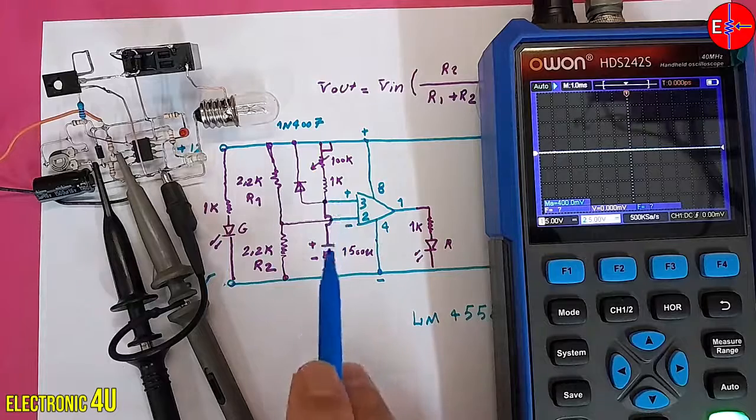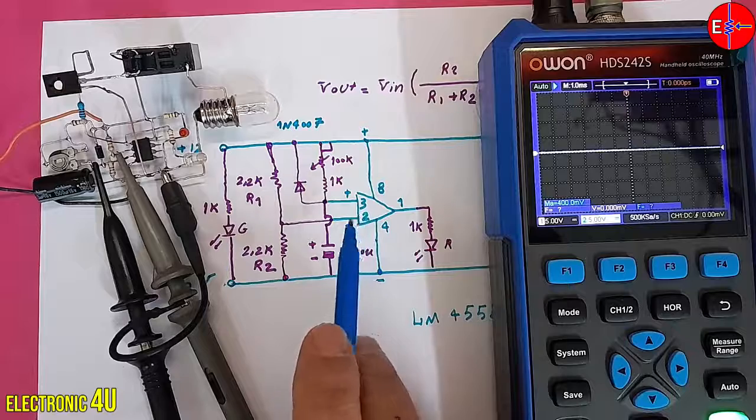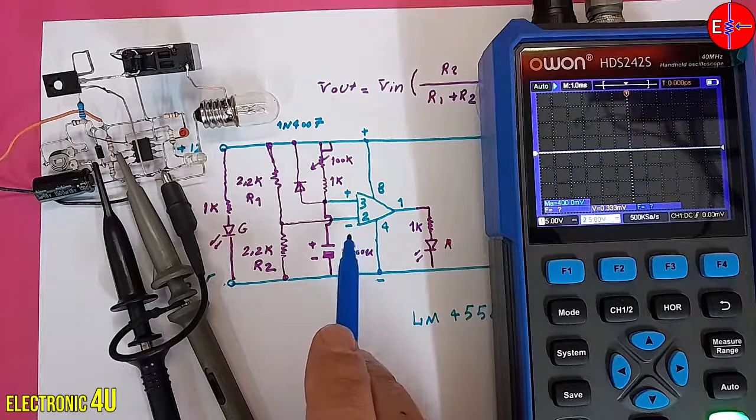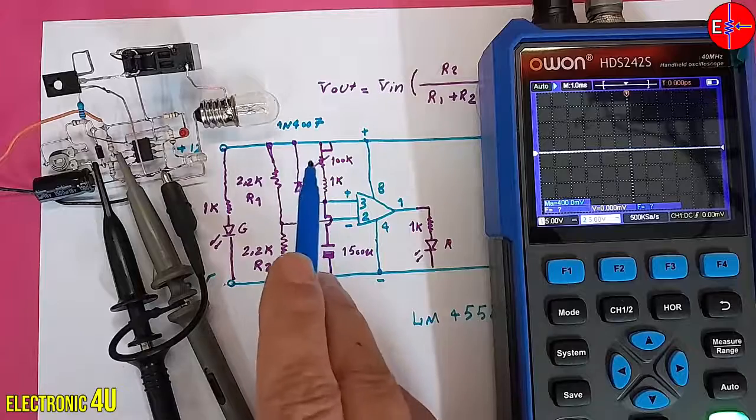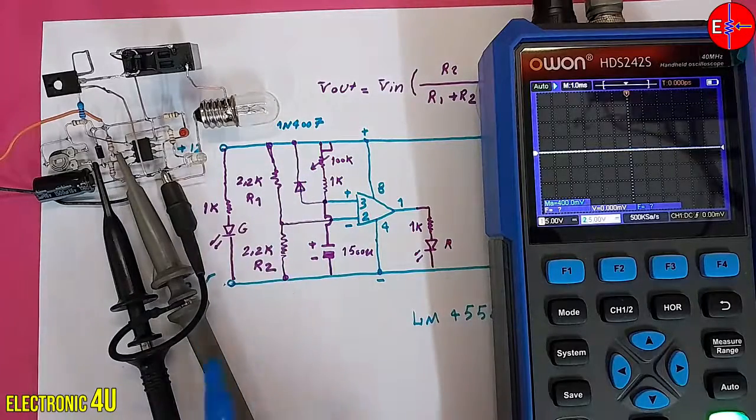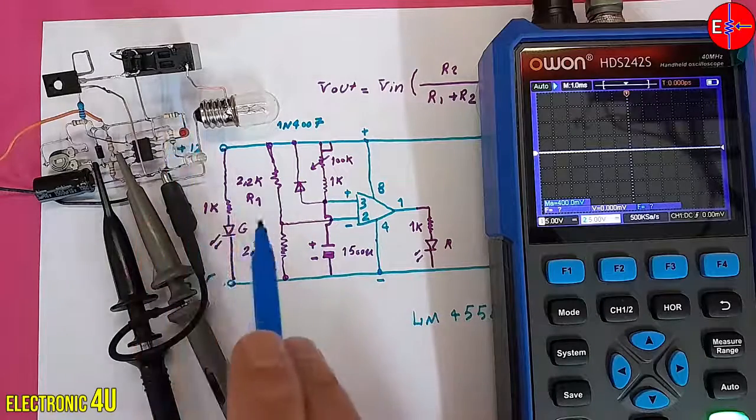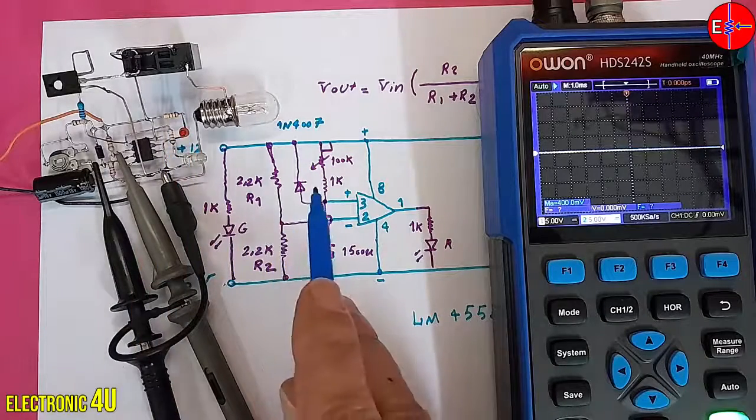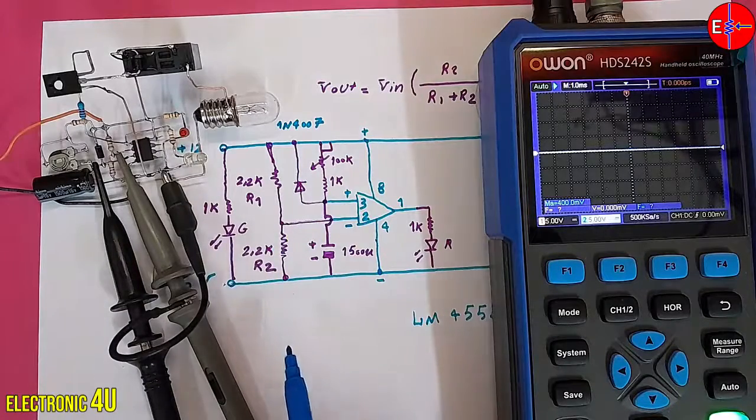The delay time corresponds to the time it takes for the voltage at pin 3 to reach and slightly exceed the voltage at pin 2, during which the capacitor is charged through the resistor and potentiometer. In this experiment, I use an LED. But you can use a relay or a transistor to trigger anything. And later in the video, I'll demonstrate the same for you.